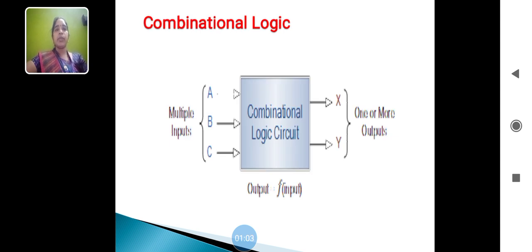The Combinational Circuit will be shown in the figure. ABC are multiple inputs. The Combinational Circuit can perform these ABC inputs and give outputs like X and Y. One or more outputs can be given. That output, before entering this figure, the Combinational Logical Circuit can be mentioned in the form of function F.